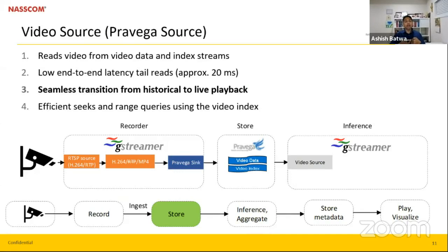The auxiliary component is the Pravega source, used for reading data from Pravega video data and index streams. It reads video from the video data and index streams, provides low end-to-end latency with tail reads of approximately 20 milliseconds, seamlessly transitions from historical to live playback, and is efficient in seeking and range queries using the video index.